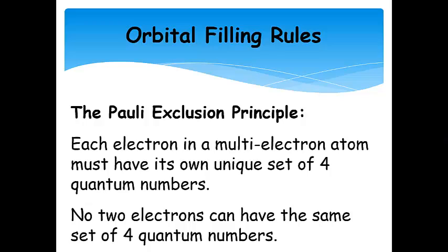Another important rule is the Pauli exclusion principle. Every electron has to have its own unique set of four quantum numbers — no two electrons can have the same set of four quantum numbers. That absolutely cannot be broken. If you break the Pauli exclusion principle, you have an invalid electron configuration — it's wrong and cannot exist.